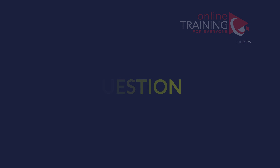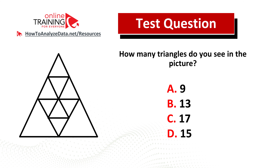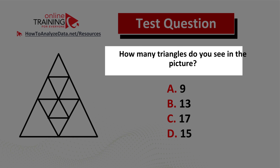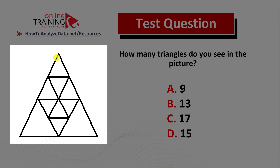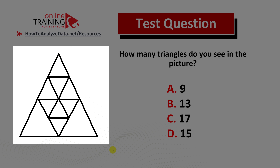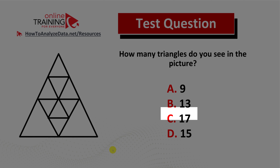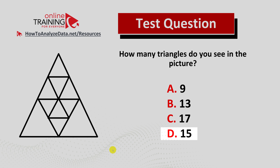Let me share with you a tricky question which tests your analytical skills. How many triangles do you see in the picture? You have a triangle presented with smaller triangles inside, and four possible choices: choice A 9, choice B 13, choice C 17, and choice D 15. Do you think you know the answer? Now might be a good time to pause this video to see if you can come up with the solution on your own.